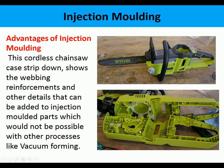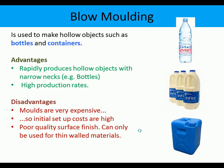This product couldn't be created with something like vacuum forming. Blow moulding is a process used to make hollow objects such as bottles and containers. The advantages are it rapidly produces hollow objects with narrow necks, i.e. bottles. The disadvantage is moulds are very expensive. Again it's a mass production finish, the surface finish is not brilliant, and it's only suitable for thin-walled materials. So not as versatile as injection moulding, but a very quick mass production process.